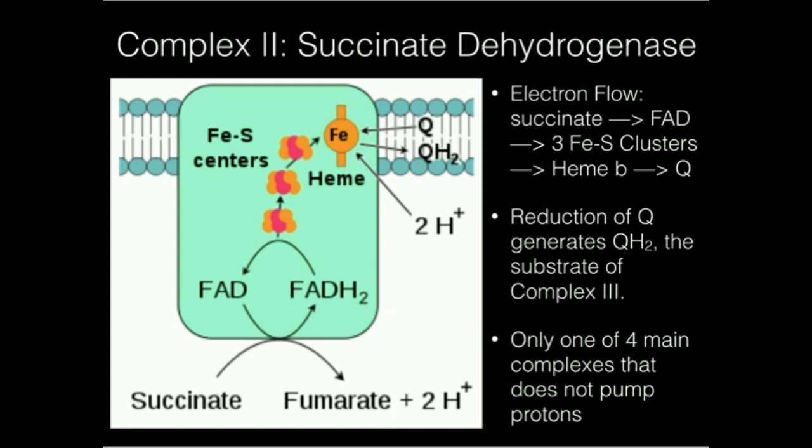Succinate dehydrogenase's main reaction is to oxidize succinate into fumarate. And the electrons from succinate are going to be taken up by FAD, and that's going to reduce it to FADH2. And also, succinate dehydrogenase is a flavoprotein. Now just like complex I, except for the fact that the electrons are ultimately coming off of succinate directly to the flavin.